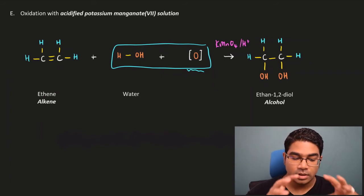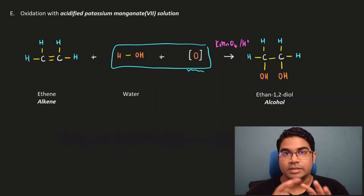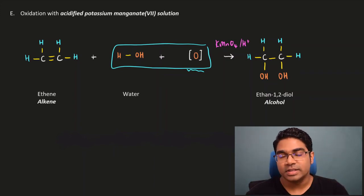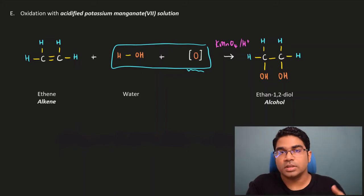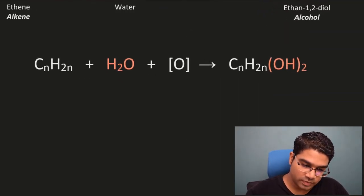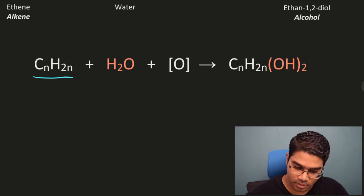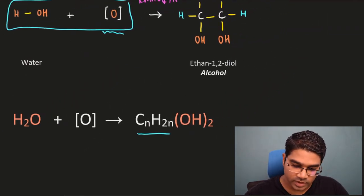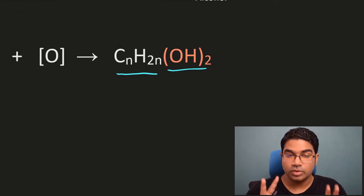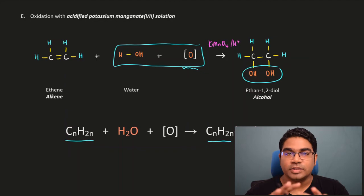It is worth noting the observation: potassium permanganate solution is a purple color solution. When it reacts and is consumed, the solution becomes colorless. So the observation is the solution turns from purple to colorless. The general reaction: take the original alkene and add (OH)2 representing the two hydroxyl groups. This reaction is also spontaneous — no special conditions needed. Out of all five addition reactions, only two need special conditions: hydrogenation and hydration. The rest occur spontaneously.